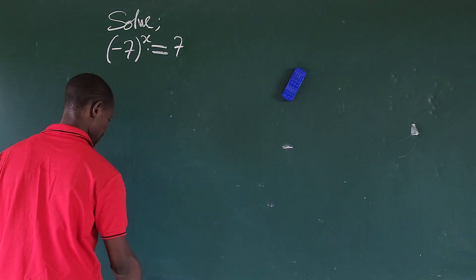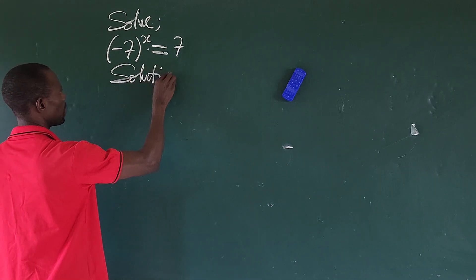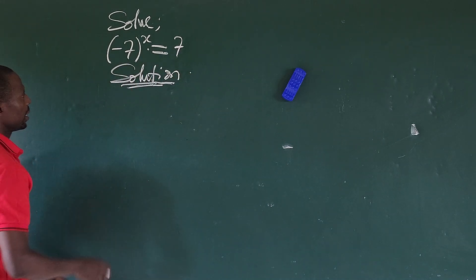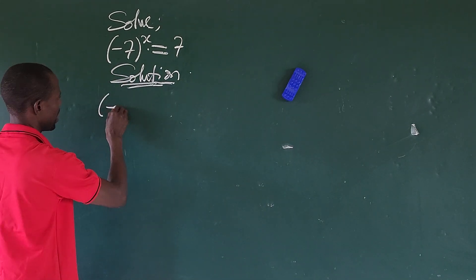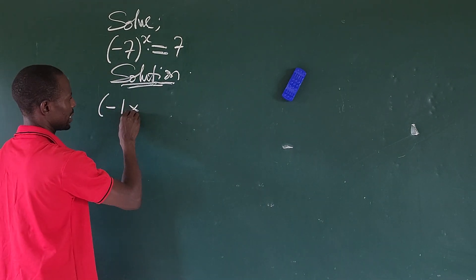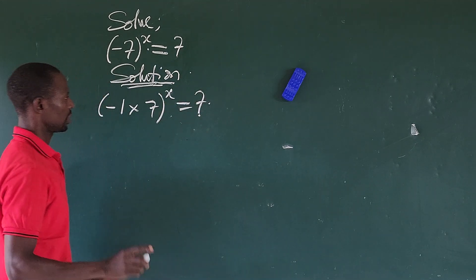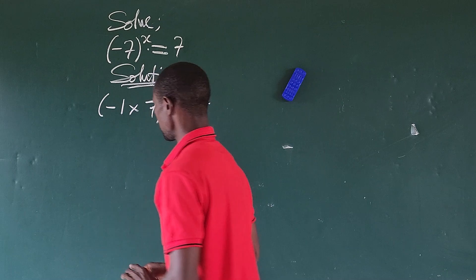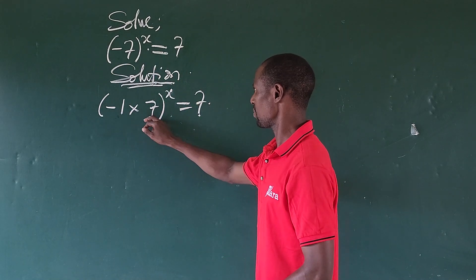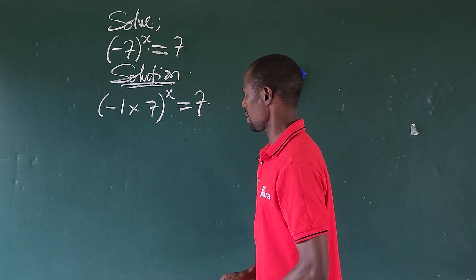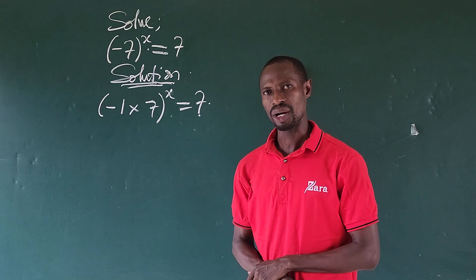So we take our solution here. We can rewrite the expression as bracket (minus one) times seven, all to the power of x, equal to seven. If you look at this carefully, we are having minus one here, and here we are having seven. If you multiply minus one by seven, it gives us back what we have in the original expression.